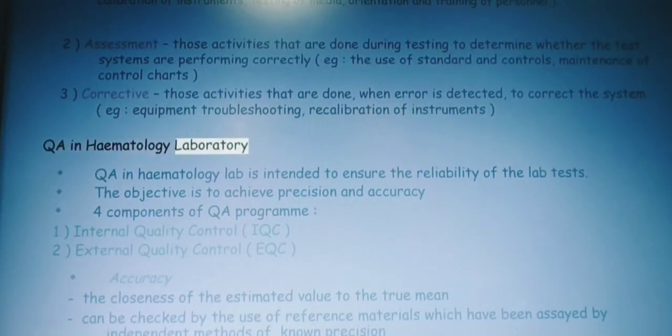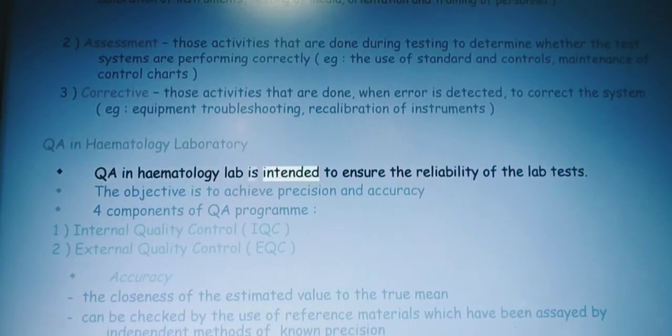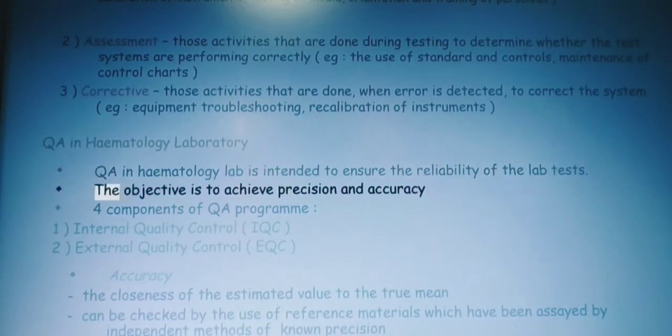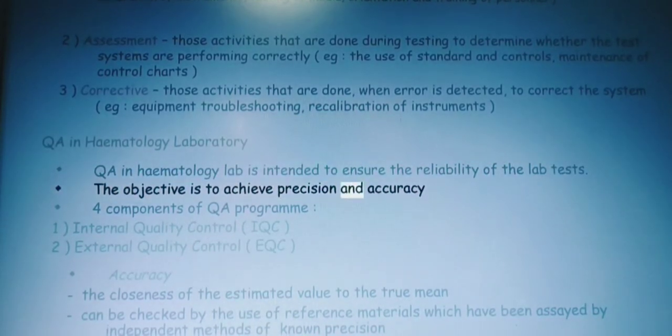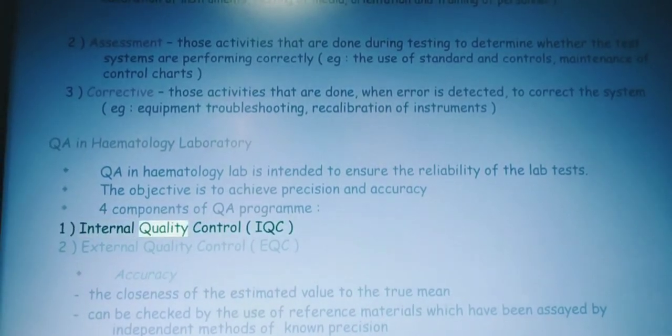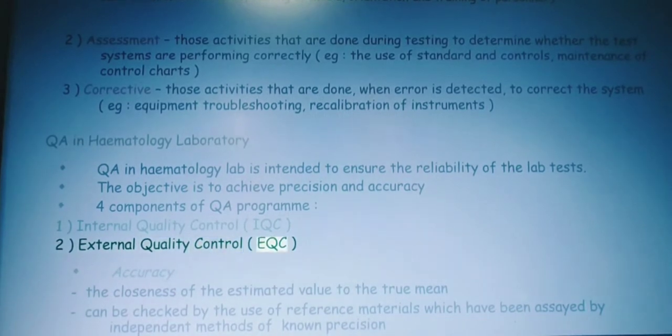QA in Hematology Laboratory. QA in hematology lab is intended to ensure the reliability of the lab tests. The objective is to achieve precision and accuracy. Four components of QA program: one, internal quality control IQC; two, external quality control EQC.